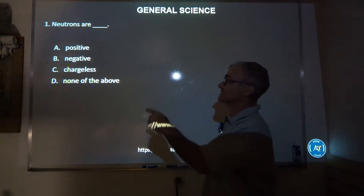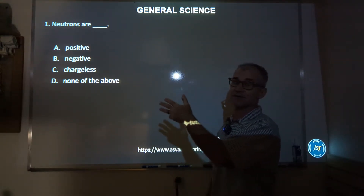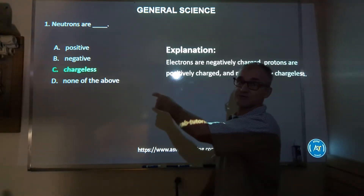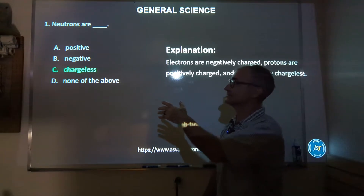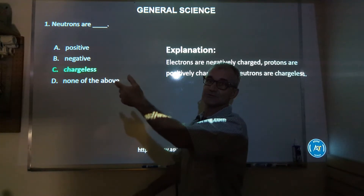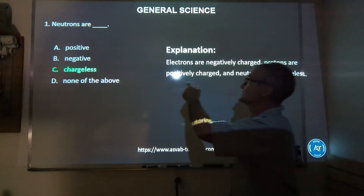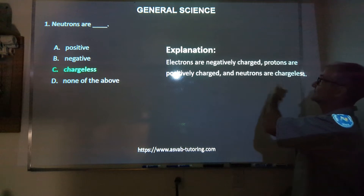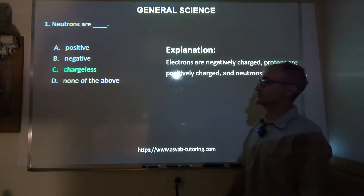Number one: neutrons are positive, negative, chargeless, or none of the above? Pause the video and take your shot. Neutrons are chargeless, and this kind of makes sense even if you don't know the correct answer, because the base of the word neutron is neutral. Neutral means neither positive nor negative, so the correct answer is C, chargeless. Electrons are negatively charged, protons are positively charged, and neutrons are chargeless or neutral.